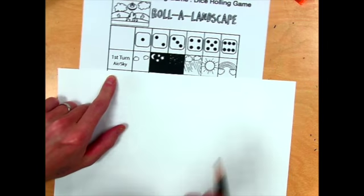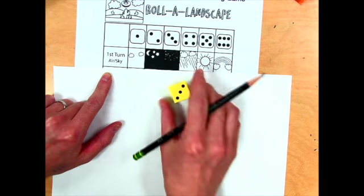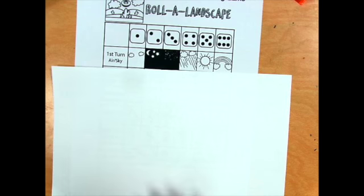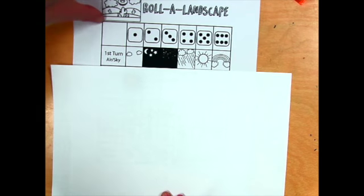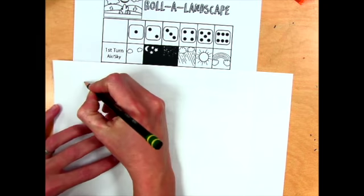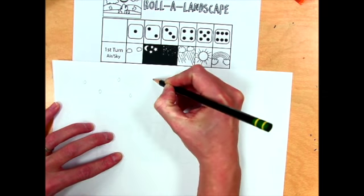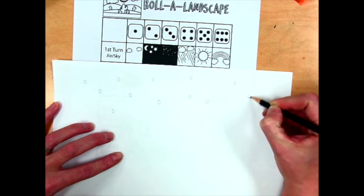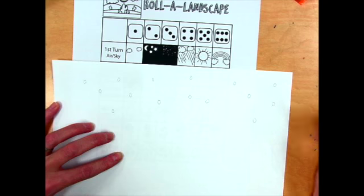On my first turn, I'll look at that first row for the air and sky. I roll my dice and get a three, so my background is going to be dark with stars. I'm just going to sketch it in first, then come back with markers, crayons, or colored pencils. I'll sketch some areas where I'll keep the stars light up in the sky, then color around that when I'm done.